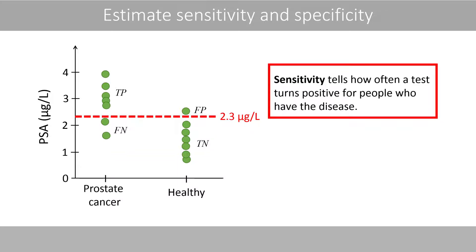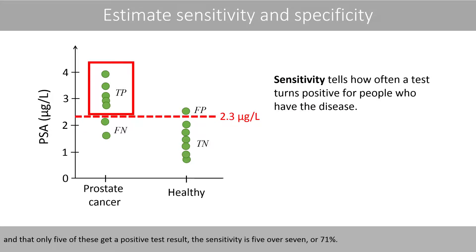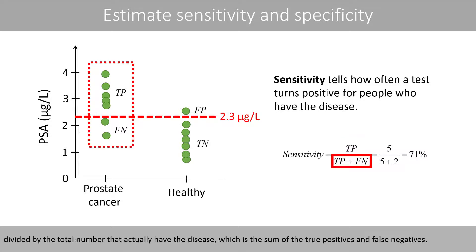Sensitivity tells how often a test turns positive for people who have the disease. Since we know that these seven individuals have prostate cancer, and that only five of these get a positive test result, the sensitivity is 5 over 7, or 71 percent. The sensitivity is therefore calculated as the number of true positives divided by the total number that actually have the disease, which is the sum of the true positives and the false negatives.